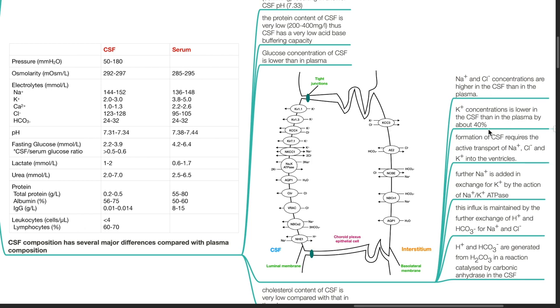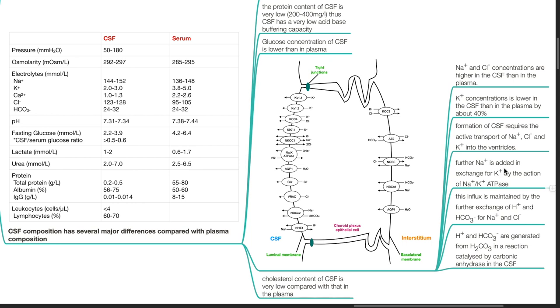Formation of CSF requires the active transport of sodium, chloride and potassium into the ventricles. Sodium is added in exchange for potassium by the action of sodium-potassium ATPase.